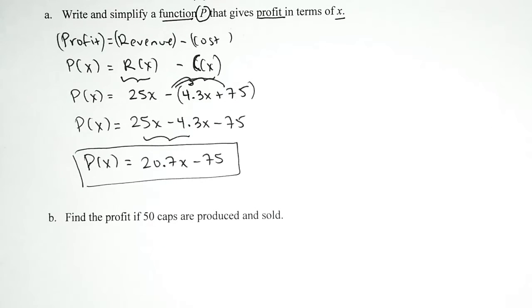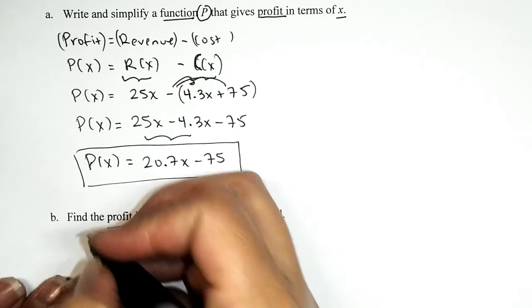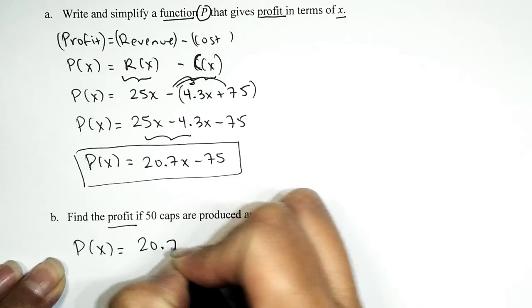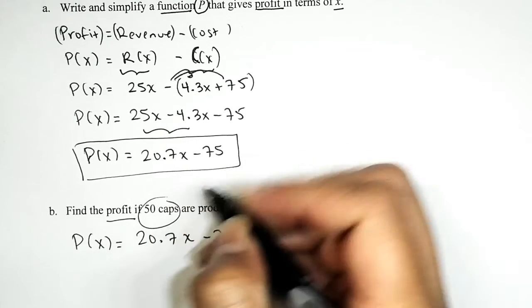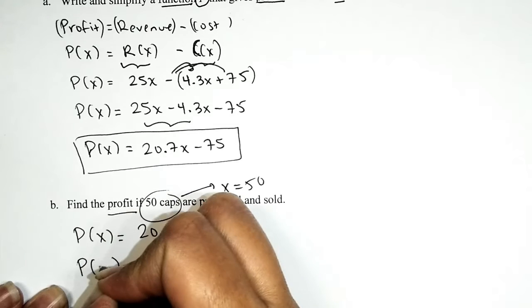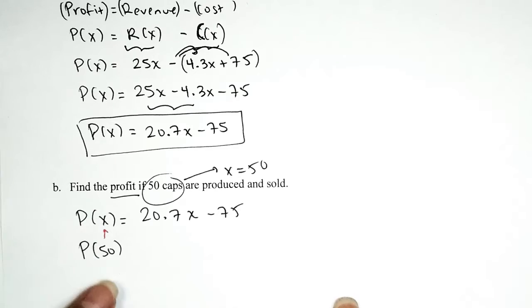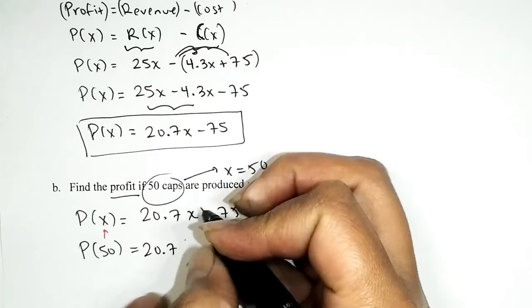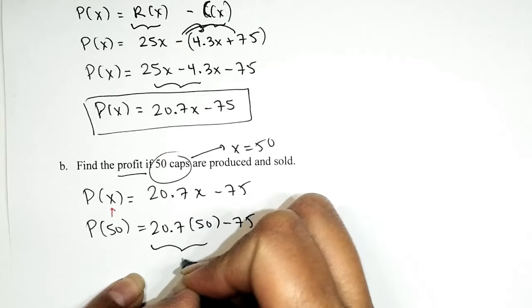Problem b reads: find the profit if 50 caps are produced and sold. We just wrote a nice function to calculate the profit, so let's use it. We have P of X equals 20.7X minus 775. Find the profit when X equals 50 — this boils down to finding P of 50. We substitute 50 for X: 20.7 times 50 minus 775. Punching it in gives us 960.